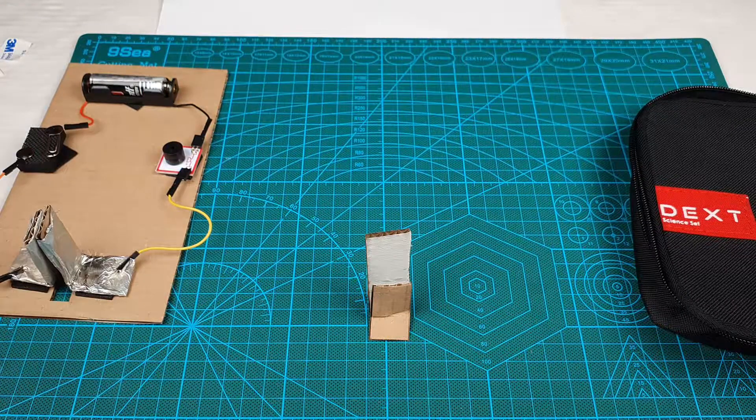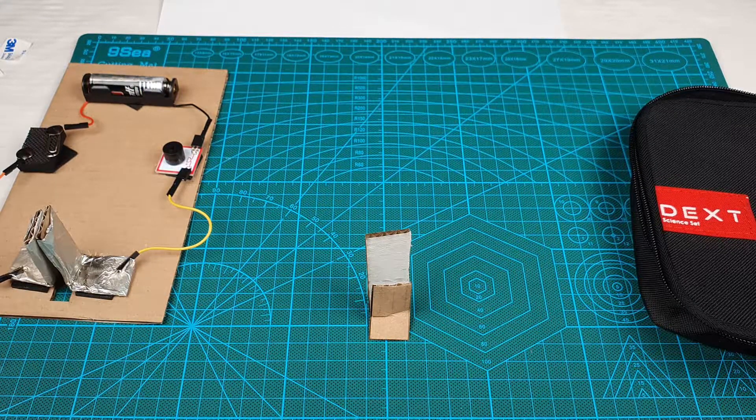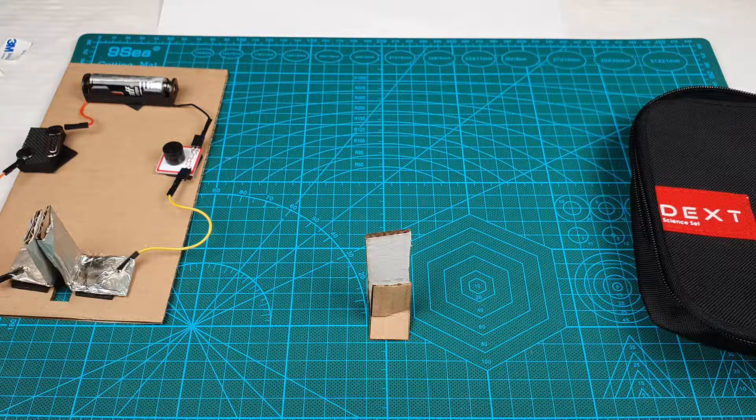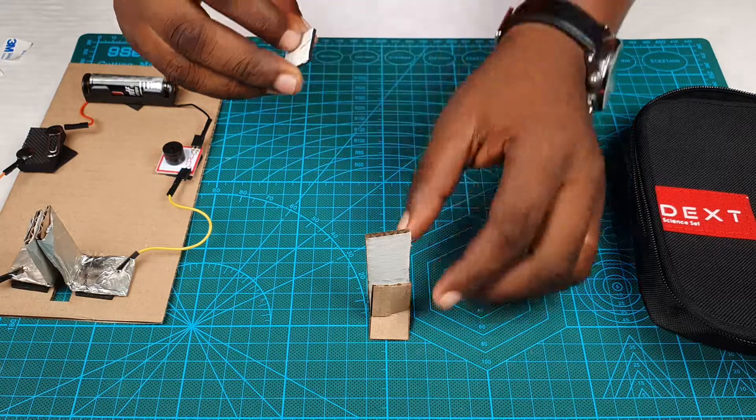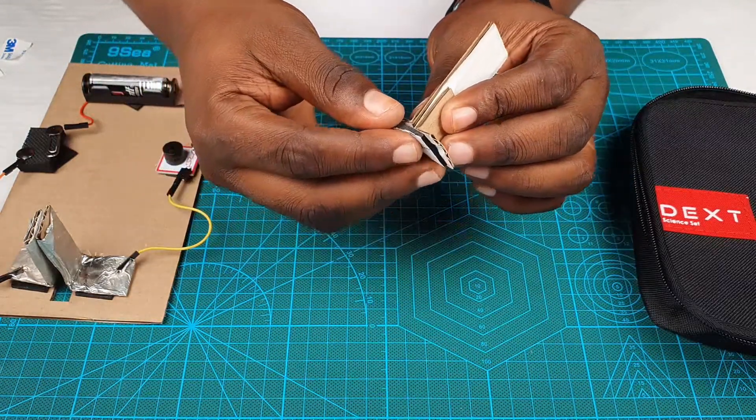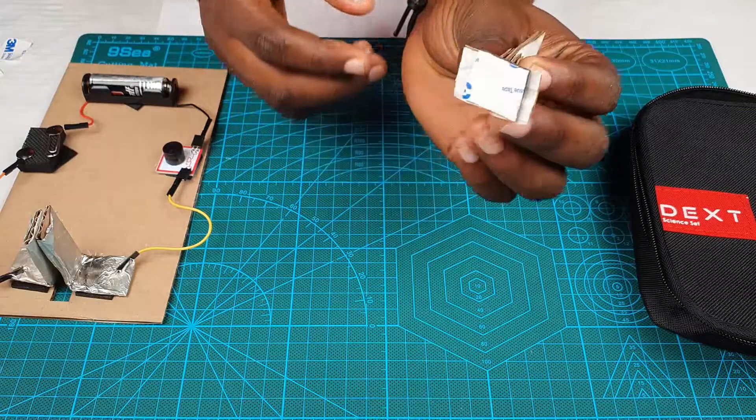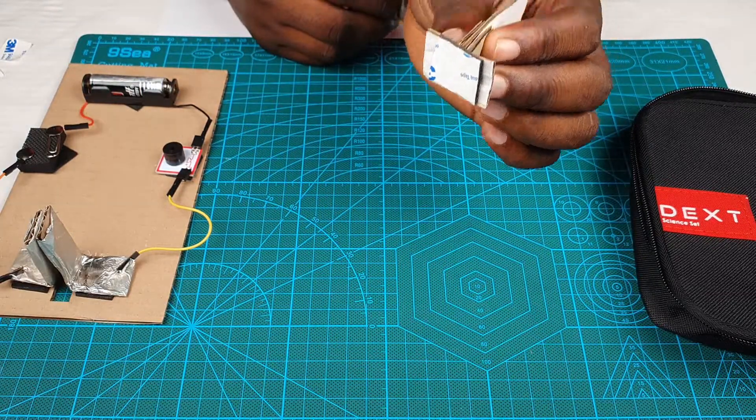Now, the next thing you're going to do is to attach some double sided tape right here. Good. It's all ready to be fixed.